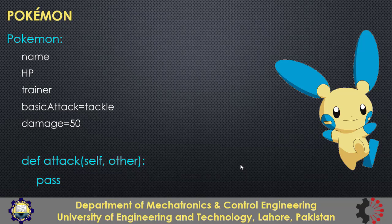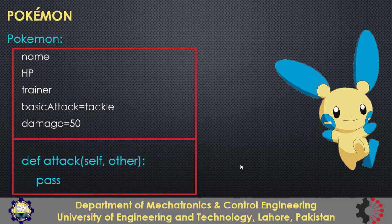As we know, we have different types of Pokemons. We will have the parent class as Pokemon, and it has attributes like its name, HP (hit point) which defines the health, then it has a trainer who trained it, then basic attack type set to 'tackle' and damage set to 50, which determines the amount of damage it will impose on other Pokemons. Then it will have a method 'attack' to attack other Pokemons.